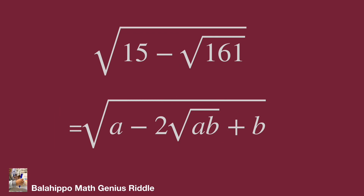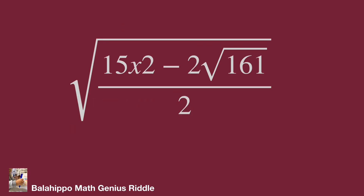For a perfect square form, we need a term like 2√(ab). But √161 does not have the factor of 2. So I am going to introduce 2 into √161. Therefore, we transfer the expression into a fraction: (15 times 2 minus 2√161) over 2.